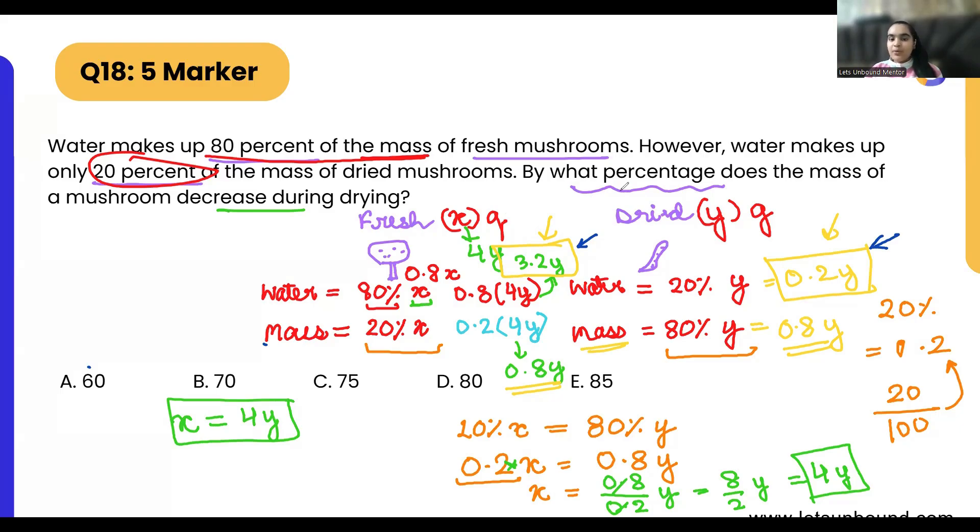Now what will happen? We are going to find out percent decrease in the mass of mushroom. So we know that the initial mass is 4y and the final mass is only y. So what we will do is we will find out the change by subtracting the initial mass with the final mass. So 4y minus y divided by initial mass, that is 4y.